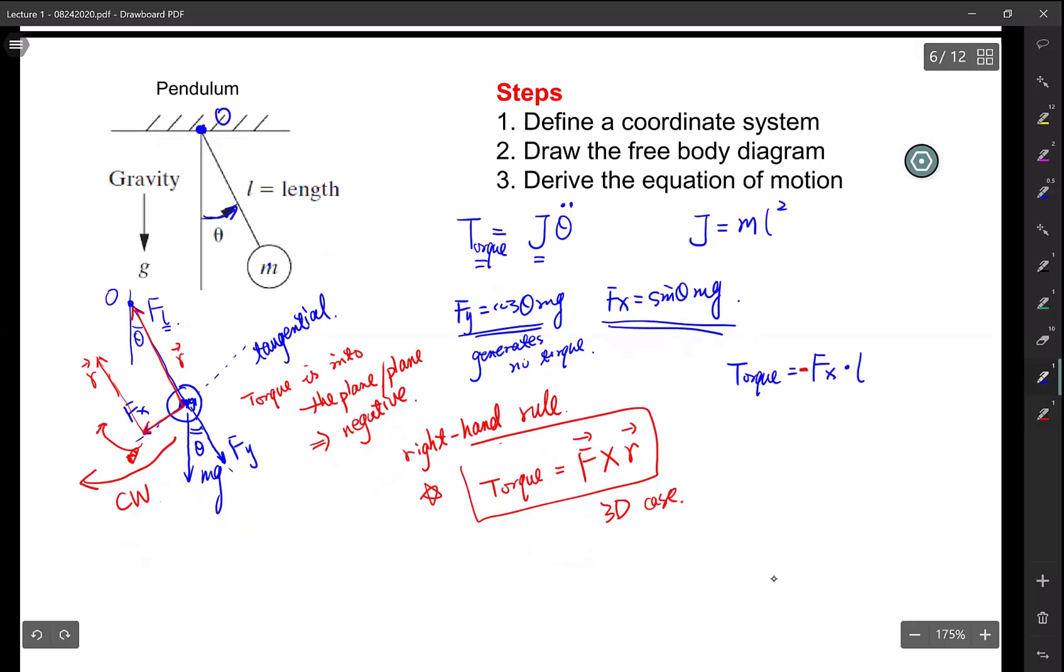Let's sum these together. We have FxL. Your torque is minus sine theta MgL equals ML squared theta double dot. That's your equation of motion.